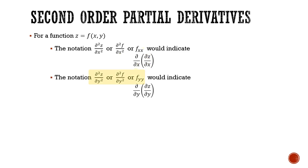Similarly, we might have the notation ∂²z/∂y², ∂²f/∂y², or f sub yy — all interchangeable notations. This means we first take the derivative of z with respect to y, and then take the derivative a second time with respect to y.